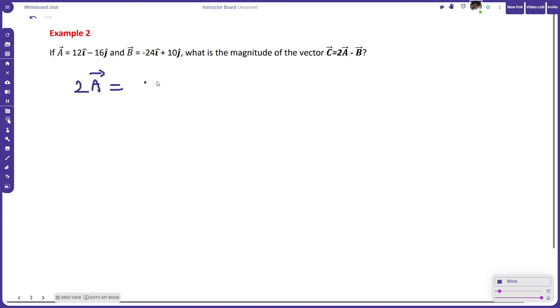a vector is just multiplying that scalar with each component of the vector. So we will get 2 into 12 in the direction of i, minus 2 into 16 in the direction of j cap.